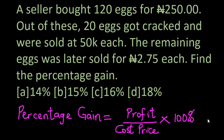A seller bought 120 eggs for 250 naira. Out of these, 20 eggs got cracked and were sold at 50 kobo each. The remaining eggs were later sold for 2 naira 75 kobo each. Find the percentage gain.